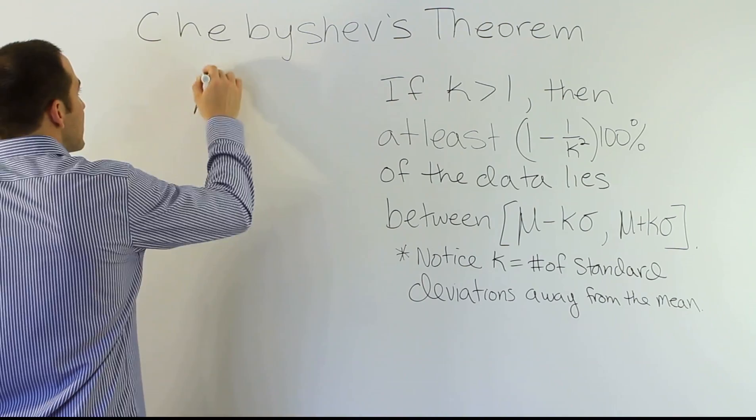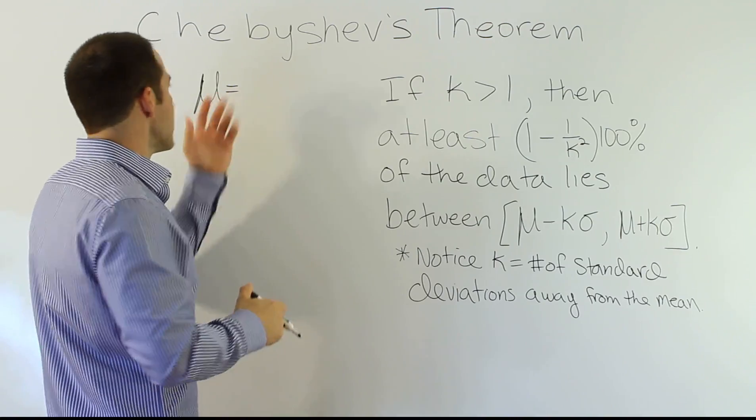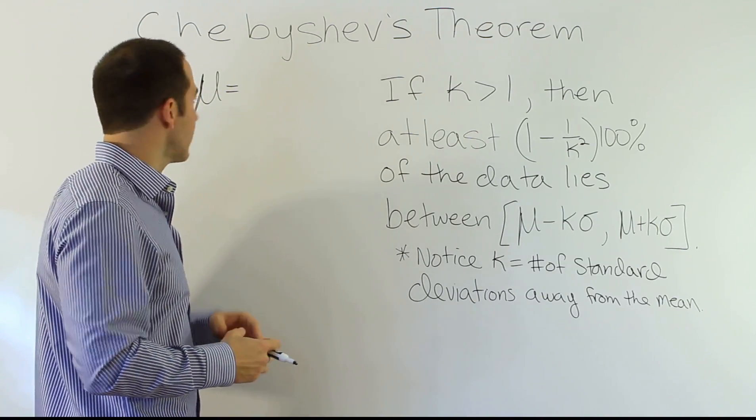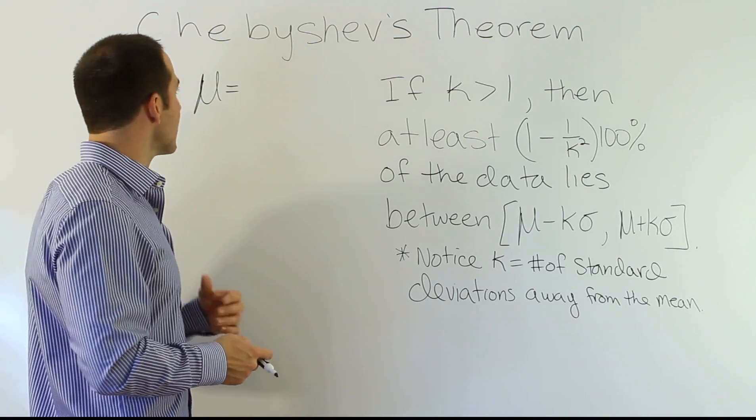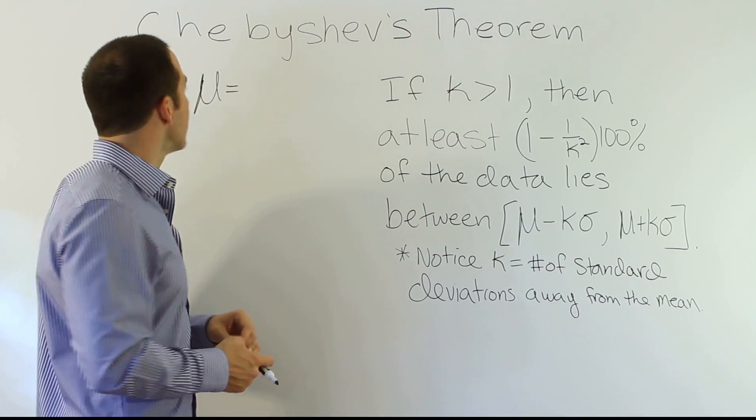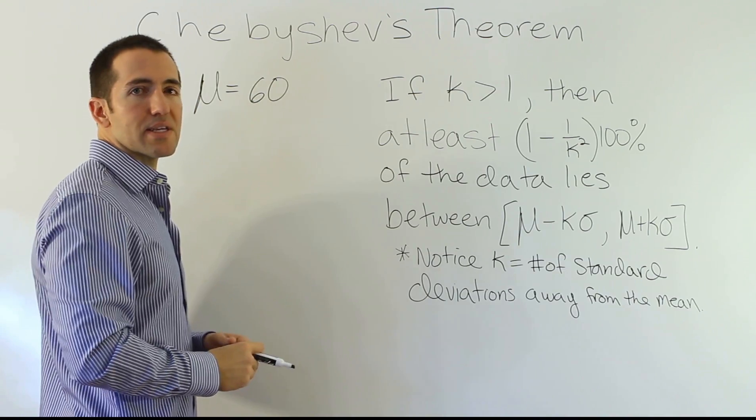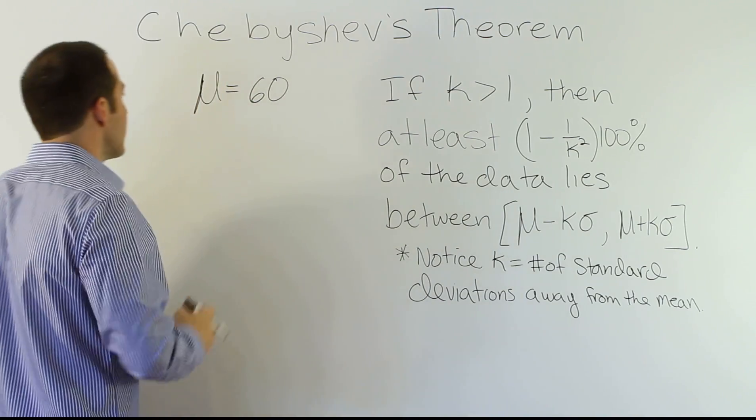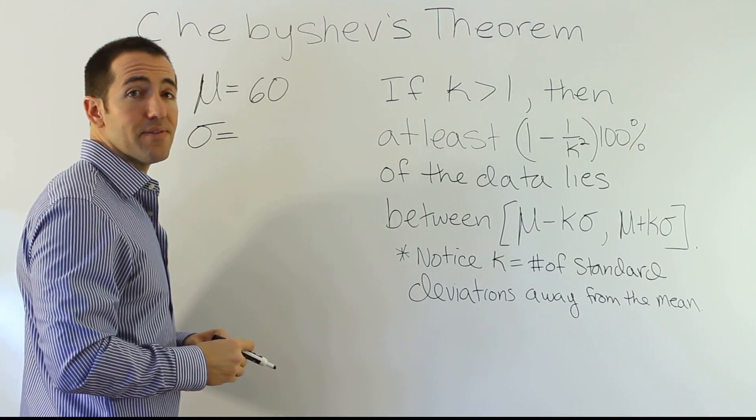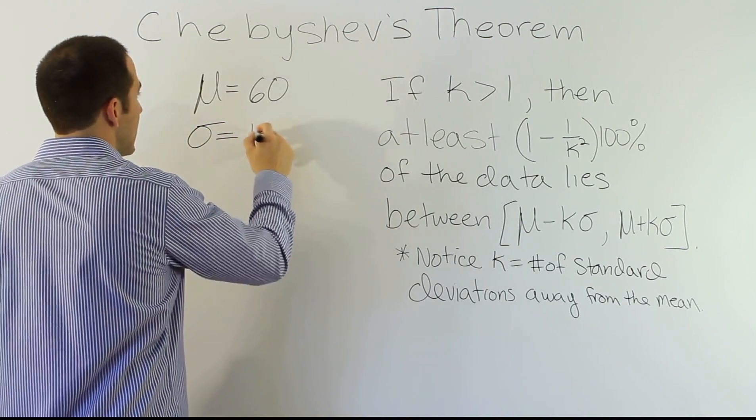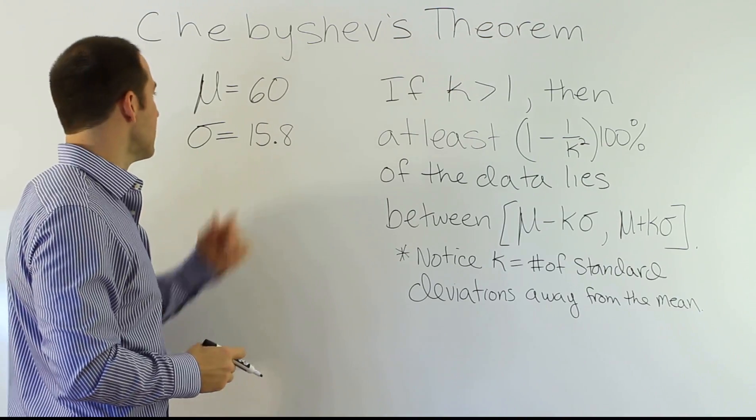So let's take a quick example. Let's say that the average amount of time it takes a survey or a sample of women, let's say that it's a population average. In reality, we probably wouldn't know it. But let's assume we know the population average for the length of time it takes women to get ready for work in the morning. Let's say the average is 60 minutes, and it typically takes 60 minutes to get ready for work for women in the morning. Let's say the standard deviation for that variable is 15.8.